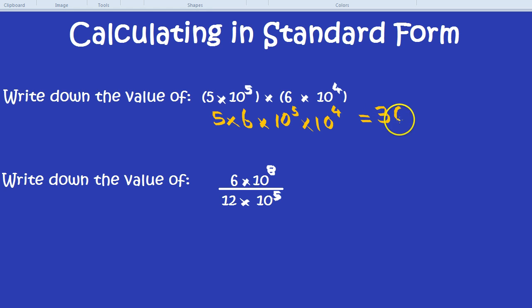And 10 to the power of 5 times 10 to the power of 4. Well, what we can do for that is add the powers. When you multiply two numbers with the same base, so in this case 10, you can simply add the powers on top. 10 to the power of 5 times 10 to the power of 4 is going to be 10 to the 9.